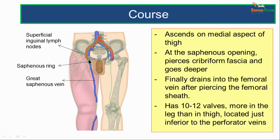The saphenous opening is a round opening in the fascia lata lying about 2 cm below and lateral to the pubic tubercle. As the great saphenous vein reaches the saphenous opening, it passes through it, piercing the cribriform fascia and going deeper. It finally drains into the femoral vein after piercing the femoral sheath. Along its course, the great saphenous vein has 10 to 12 valves, more in the leg than in the thigh. These valves are located just inferior to the perforator veins.